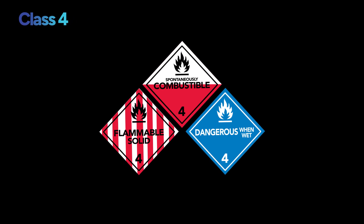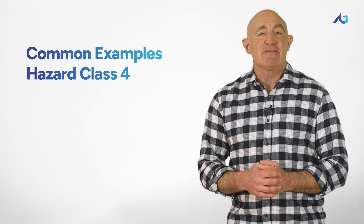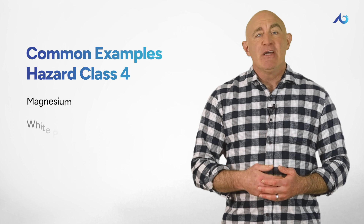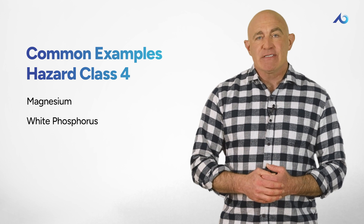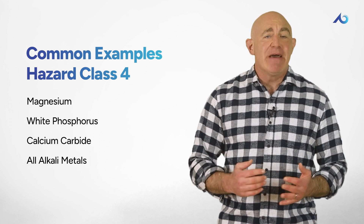Class 4 includes all solid materials that pose a serious risk of fire, and are separated into categories based on if they can cause a fire, spontaneously create heat, or create a flammable gas when exposed to water. Some common examples of hazard class four include magnesium, white phosphorus, calcium carbide, and all alkali metals.